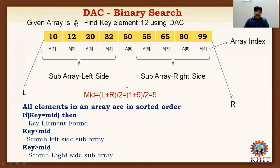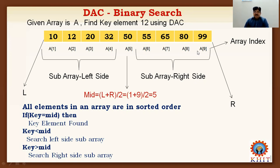We need to find key element 12. Element 12 is located in the left side sub-array and is not available in the right side sub-array. So we simply ignore the right side sub-array. The key element is not found in the right side, so we ignore elements A[6] to A[9], reducing the array size.